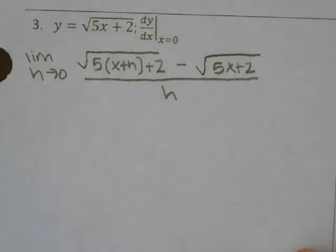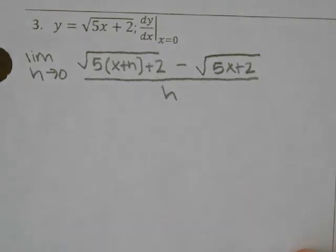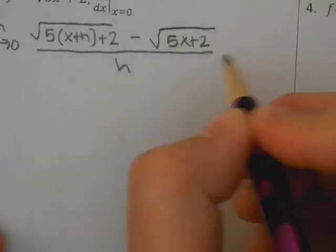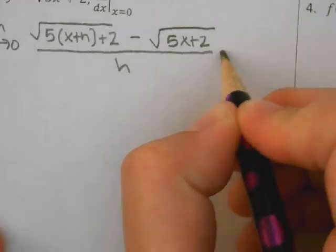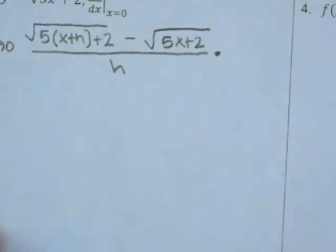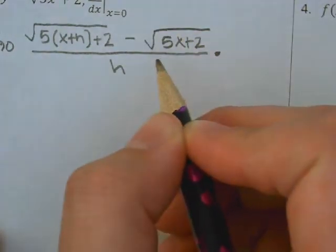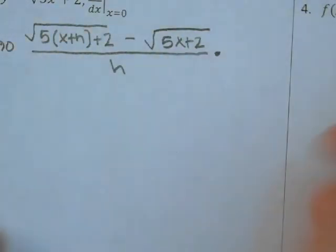And what type of problem did this just become to find the limit? We're going to rationalize or use a conjugate, right? So I'm going to multiply this by that whole thing, but with a plus in the middle.